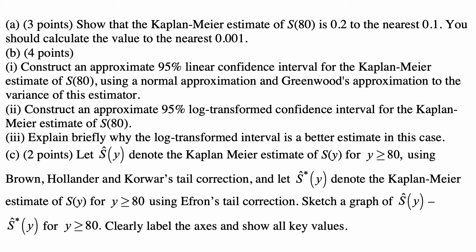Let S-hat-star(y) denote the Kaplan-Meier estimate of S(y) for y ≥ 80 using Efron's tail correction. Sketch a graph of S-hat(y) minus S-hat-star(y) for y ≥ 80. Clearly label the axes and show all key values.